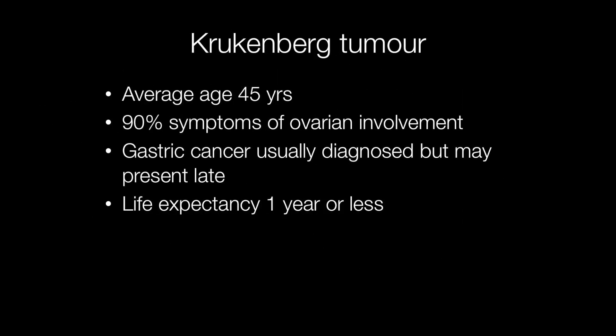The average age at which Krukenberg tumours present is around 45 years old, and 90% of them present with symptoms of ovarian involvement. The gastric cancer causing the Krukenberg tumour is usually diagnosed by the time it presents in the ovary.